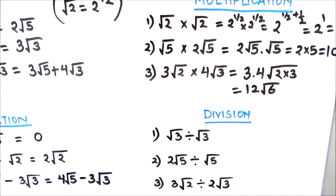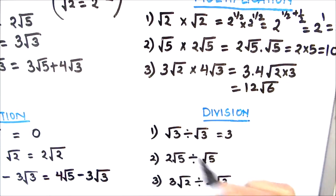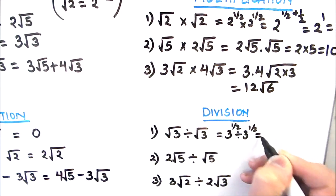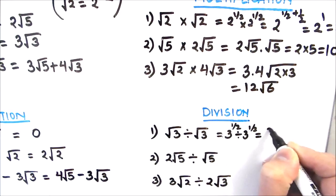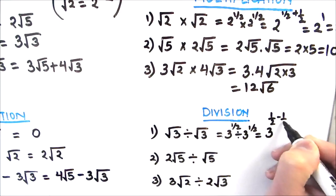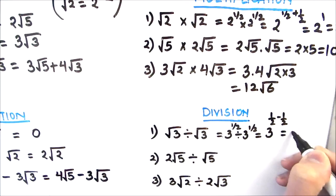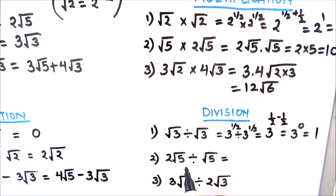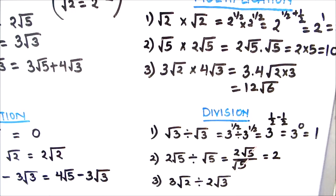Let's now learn division of roots. When you divide any number by the same number you get 1. Using exponents: root 3 divided by root 3 is 3 to the power half divided by 3 to the power half, which equals 3 to the power half minus half, giving 3 to the power 0, which equals 1. Anything to the power 0 equals 1. So root 3 divided by root 3 equals 1. The next one is 2 root 5 divided by root 5 — root 5 and root 5 cancel, leaving only 2.